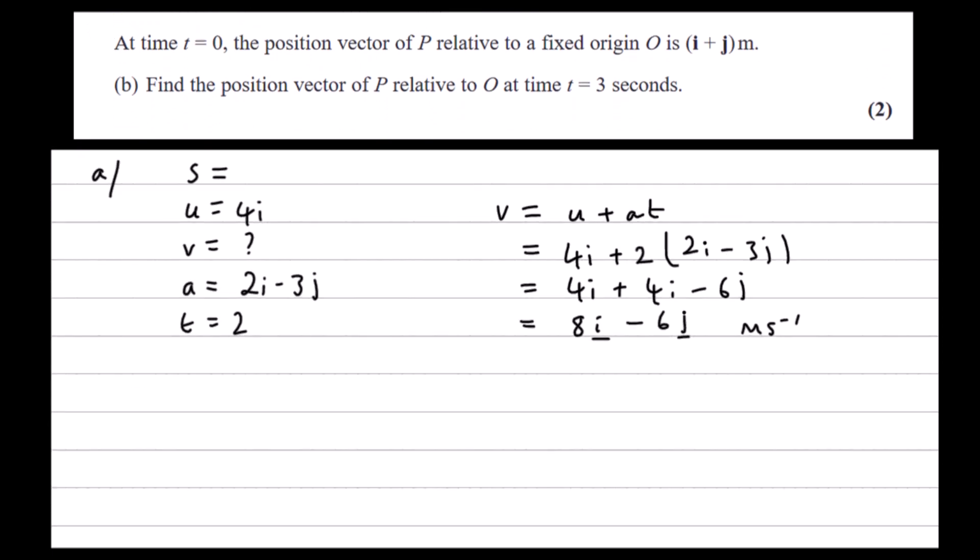Part B. At time t equals 0, the position vector of P is i plus j. So that's where it starts, that's the position it starts in. Find the position vector of P relative to O at time t equals 3. So where is it at t equals 3?